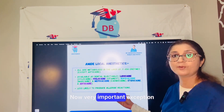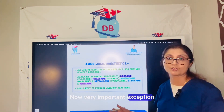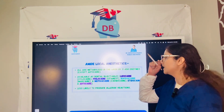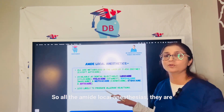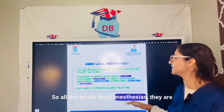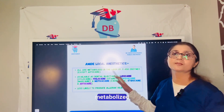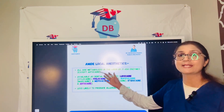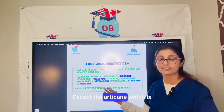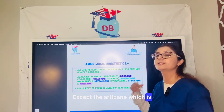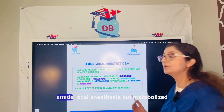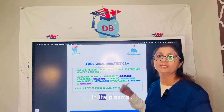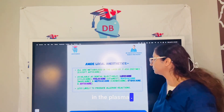A very important exception — because exceptions are always asked in the exam — is articaine. All amide local anesthetics are metabolized by the P450 system in the liver, except articaine, which is an amide local anesthetic but is metabolized in the plasma.